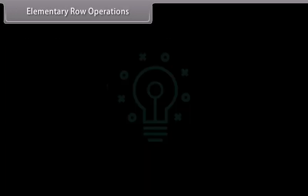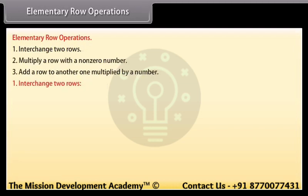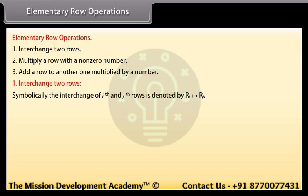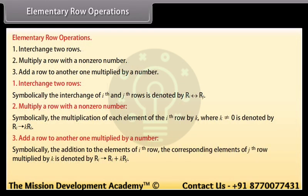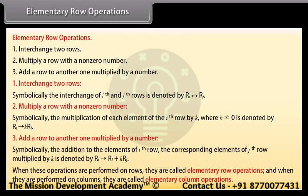Let us go through them one by one. Interchange two rows: symbolically, the interchange of i-th and j-th rows is denoted as given. Multiply a row with a non-zero number: symbolically, the multiplication of each element of the i-th row by k, where k is not equal to 0, is denoted as given. Add a row to another one multiplied by a number: symbolically, the addition to the elements of the i-th row of the corresponding elements of the j-th row multiplied by k is denoted as given. When performed on rows, these are called elementary row operations; when performed on columns, they are called elementary column operations.